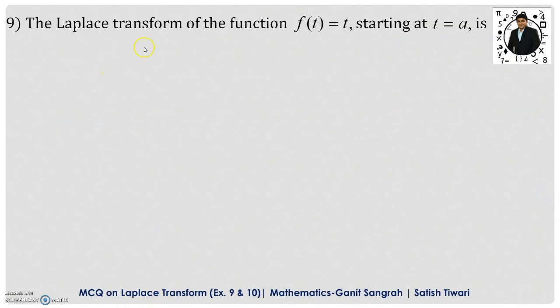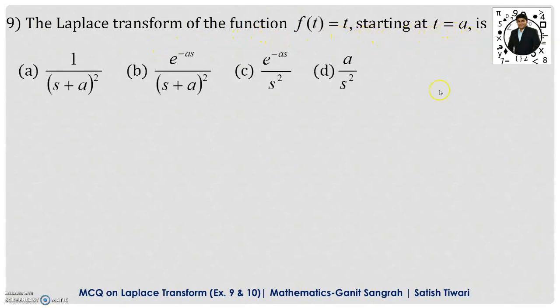Example 9: the Laplace transform of the function f(t) = t, starting at t equals to a, is given by — we are having four options.